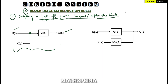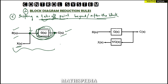Carefully observe this first case. We have the input, a G(s) block, and output C(s). There is one more signal X(s) going to a takeoff point. If I want to shift this takeoff point beyond or after this block — that means from this point to a point after the block — I am passing or jumping over block G(s).